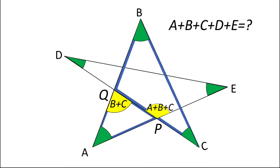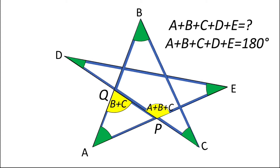Now simply, we have a third triangle D, P, E. In this triangle D, P, E, we can simply use the angle sum property, which will give us a plus b plus c plus d plus e equals 180 degrees. So friends, we have got an idea of solving the 7-pointed star problem also.